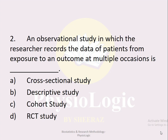MCQ number two: An observational study in which the researcher records the data of patients from exposure to an outcome at multiple occasions is: option a cross-sectional study, option b descriptive study, option c cohort study, option d RCT study. The correct option is option c, cohort study. In a cohort study we follow individuals from exposure to outcomes. For example, studying smoking patients — you start following them when they begin smoking until any abnormality appears in the lungs. This comes under the category of cohort study.